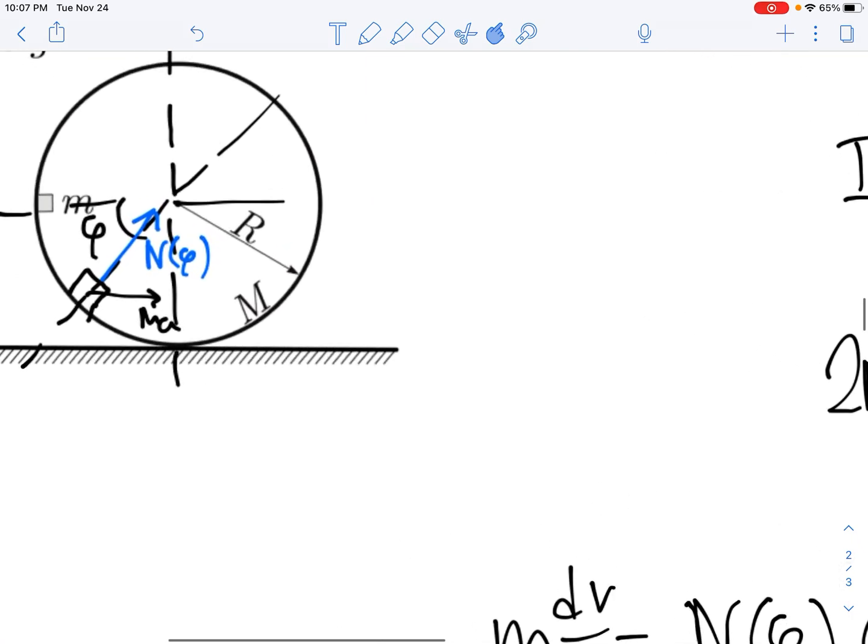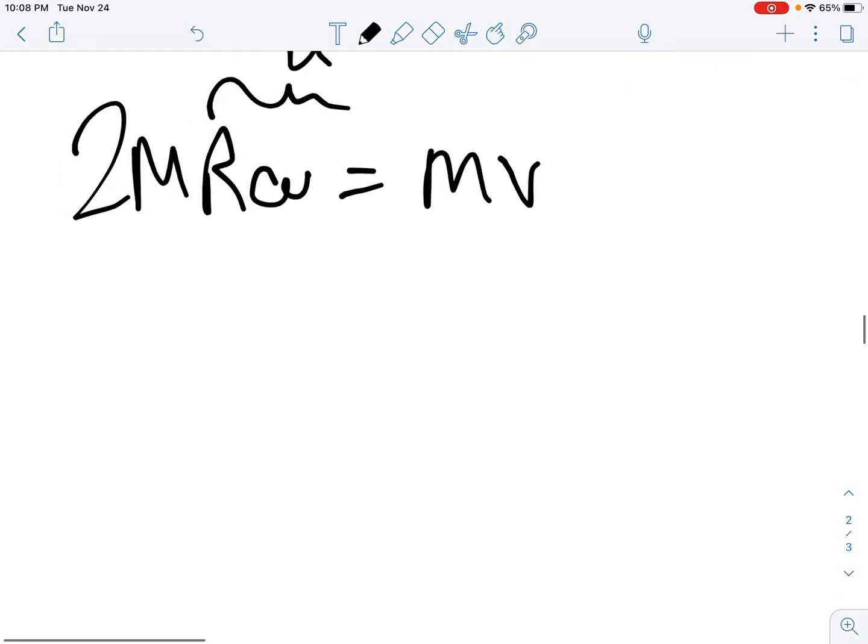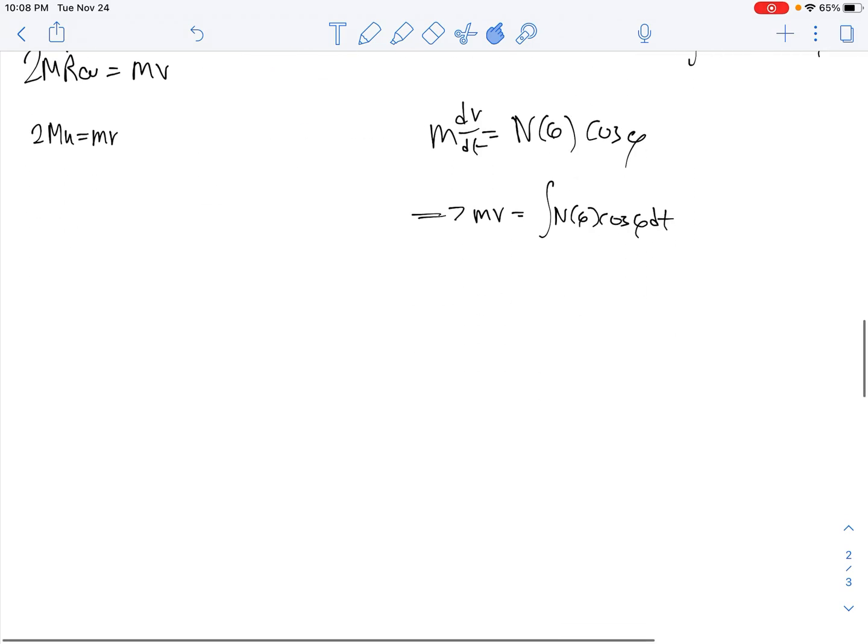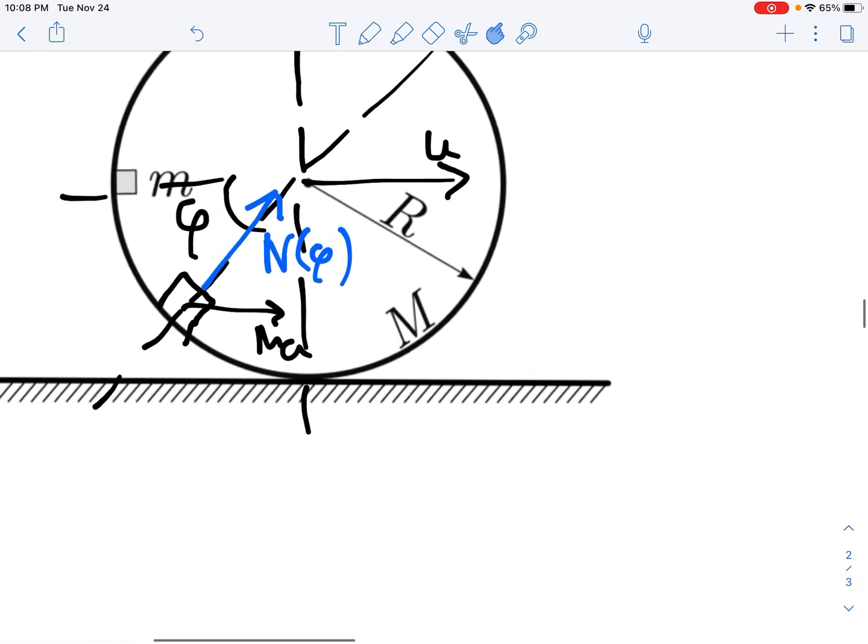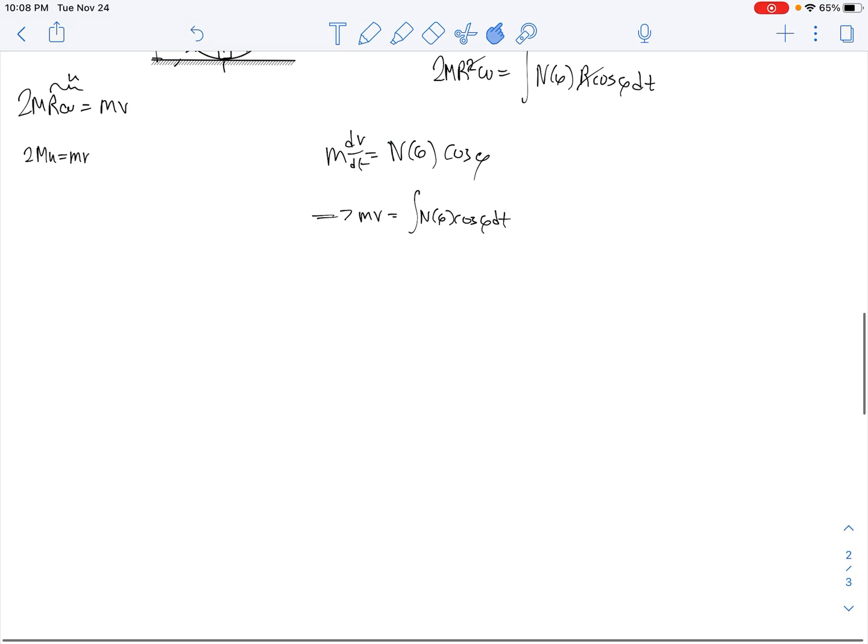So now we put this into our equation and we get 2mR omega equals m times v. The cylinder is going to be rotating without slipping. Let us say that the cylinder is moving with velocity u. Since it's moving without slipping, we can replace u with R omega. So 2Mu equals mv, and that's our first equation. This equation will be important for later. But now let us consider when the mass goes all the way to the bottom.